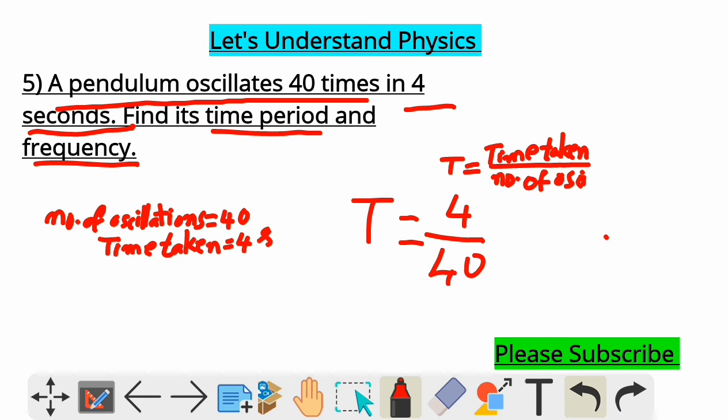T is equal to 1 by 10. Now, if you take calculation 4 ones and 4 tens, T is equal to 1 by 10. 1 by 10 means how much? 0.1 and this is time period. What is the unit? Second you will get. So, time period is equal to 0.1 second.